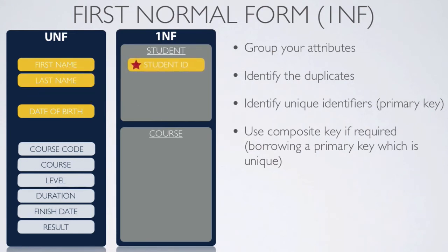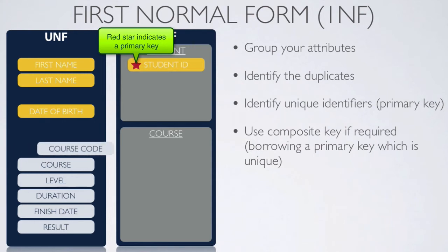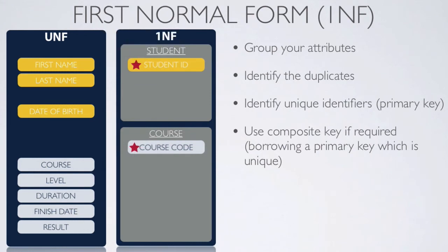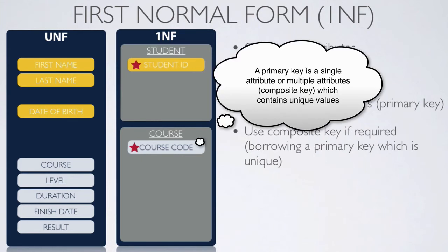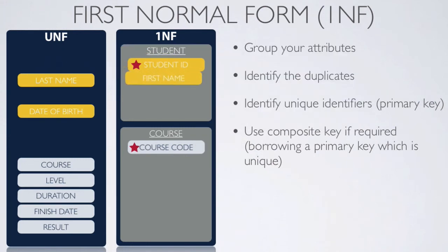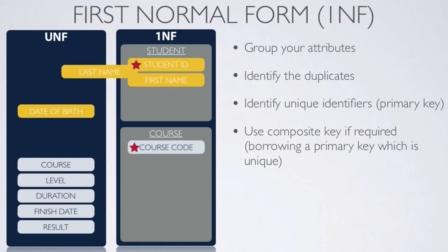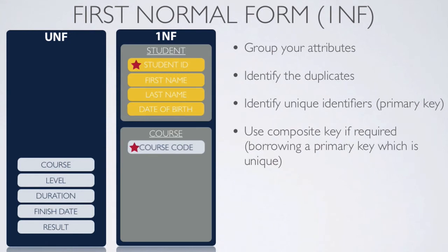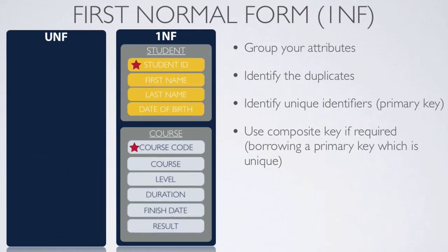The second step is to identify any attributes which can be used as unique identifiers, called primary keys. For the student table, the trainee ID is a unique number. However, the module number repeats, so we can't use it as a unique identifier on its own. Instead, we create what's called a composite key — one identifier joined with another unique identifier, which in this case would be the student ID. So the class table has a composite key of module and trainee, and the primary key for the student table is the student ID. This gives us our first normal form.